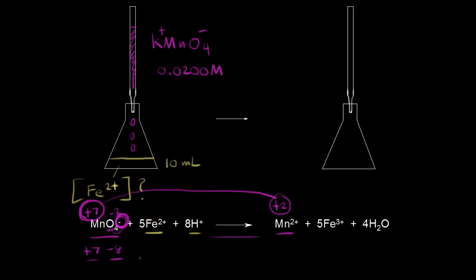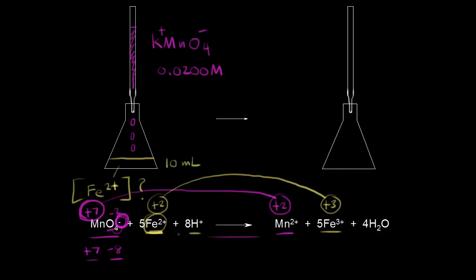Let's look at iron 2+. We have iron 2+ as one of our reactants, so the oxidation state is +2. In our products we're making iron 3+, so an oxidation state of +3. Iron is going from +2 to +3 — that's an increase in the oxidation state — so iron 2+ is being oxidized in our redox reaction.